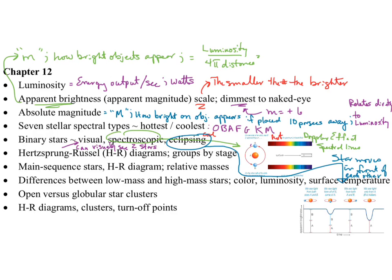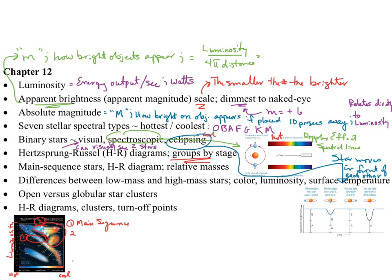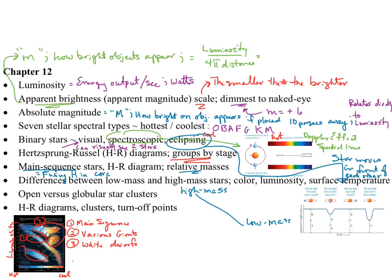Hertzsprung-Russell diagrams — HR diagrams. What's plotted along the x-axis is the temperature of the star. What's plotted along the y-axis is luminosity or absolute magnitude. There are several groups on the HR diagram: the main sequence, various giants in group two, and white dwarfs in group three. Main sequence stars are fusing hydrogen in their cores, and on the HR diagram that main sequence is that diagonal from the upper left to the lower right.